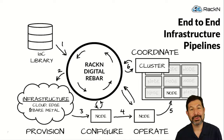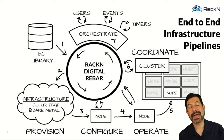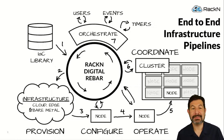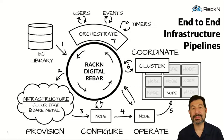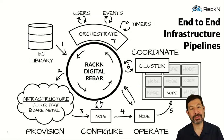And once you have those pieces working, we can start looking at real orchestration. How do we take user actions, manual controls, and put them into the system in a coherent way? Even more importantly, how do we hook this into automated events, timers, system triggers, or web hooks that are happening external to the flow of control?